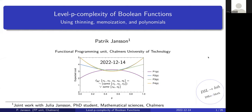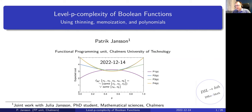I'll be talking about level p complexity of boolean functions. Please let me know if there are any questions or comments along the way. I've been using thinning, memoization, and symbolic representation of polynomials. To give a teaser of what it might look like in the end...